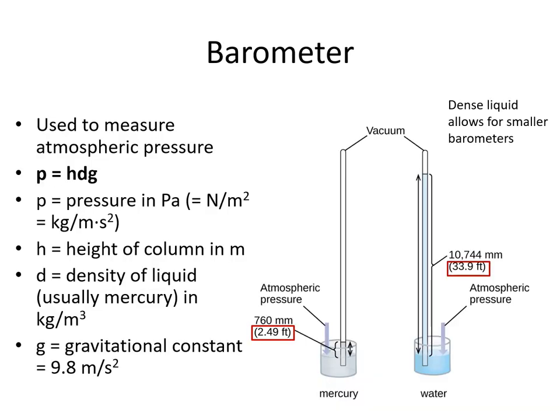The way we measure atmospheric pressure is with a barometer. A barometer has a tube, usually made of glass, inserted into a pool of liquid. The atmospheric pressure pushes on the pool of liquid and pushes some of that liquid up into the glass column. The height of the liquid in the column corresponds to a particular pressure. We can calculate that pressure using the equation p = hdg, where p is the pressure in pascals. Another conversion for pascals is kilogram per meter times seconds squared.